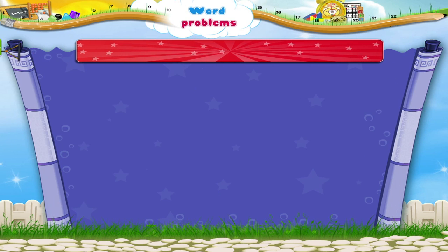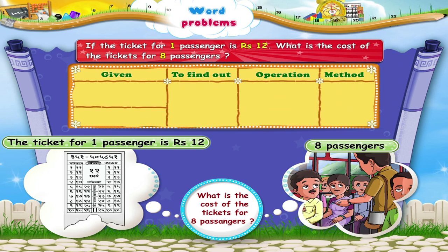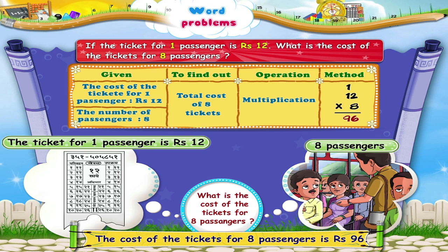Another problem. If the ticket for one passenger is rupees 12, what is the cost of the tickets for 8 passengers? Here you are given the cost of the ticket for one passenger is rupees 12, and the number of passengers is 8. The cost of the ticket for one passenger, which is 12, is multiplied by the number of passengers, which is 8. The cost of the tickets for 8 passengers is rupees 96.